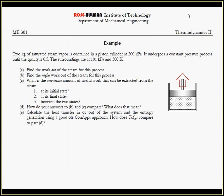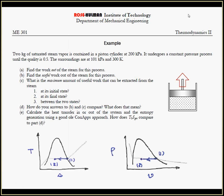The first thing we're asked to do is find the work out of the steam during this process. Even though I didn't specifically ask for it, I hope that you were drawing phase diagrams, specifically the TS diagram, and probably more important in this problem, the PV diagram. This is a constant pressure process. It starts out at state 1, which is a saturated vapor, ends up at state 2 at a quality of 0.5. By drawing the PV diagram, we discover that not only is this constant pressure, it is also constant temperature. The area underneath the curve on the PV diagram from 1 to 2 is the work per unit mass.